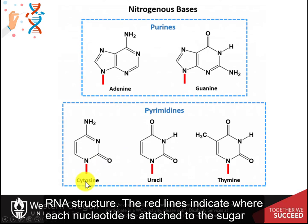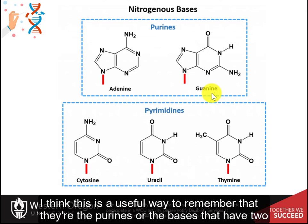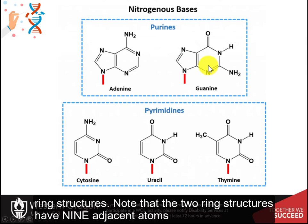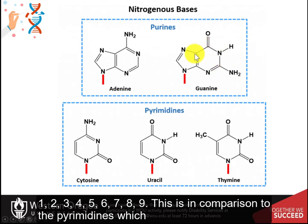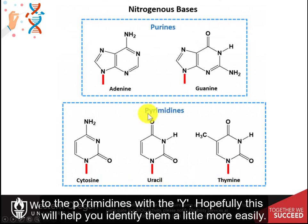The red lines indicate where each nucleotide is attached to the sugar molecule. Note that the purines adenine and guanine each have 'nine' in their name, which helps remember that they are the purines, or the bases that have two ring structures with nine adjacent atoms. In comparison, the pyrimidines contain six-membered rings. I like to link cytosine and thymine, with the Y, to the pyrimidines with the Y, to help identify them more easily.